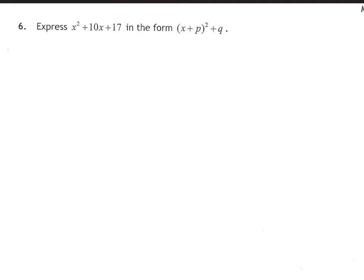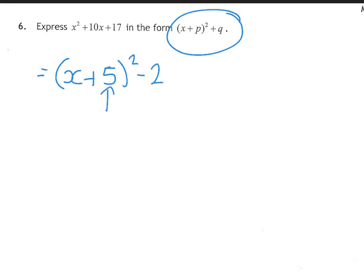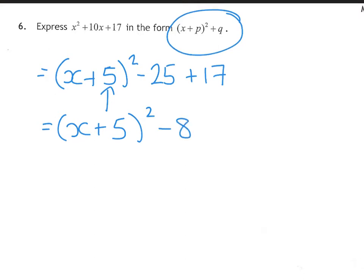Question 6 is completing the square. The bracket uses half of 10, which is 5, giving (x + 5)². We subtract whatever that value squared is, so subtract 25, then add back the 17 from the original question. Tidying up the right-hand side: −25 + 17 = −8. That's us done. If it asked for the turning point, it would be the opposite of what's in the bracket, then your end value, but it doesn't ask for that here.